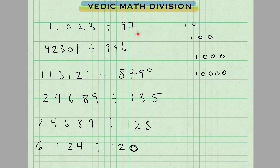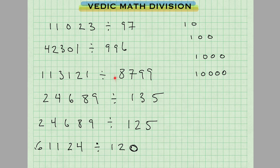You can see, for example here, this number 97 is close to base number 100 — 97 is very close to 100. 996 is very close to base number 1000. And this number 8799, that's very close to 10,000.